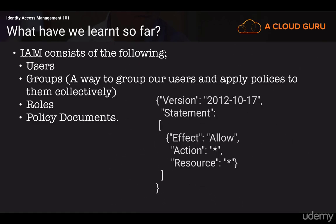If you remember from our administrator access in the lab, we saw something like this. We have our attribute which is a version, and then our value which is the date. Then our attribute which is the statement, and then our values. We can actually start to nest if we use the square brackets. Our attribute is effect and our value is allow. Our attribute is action and our value is the wildcard. Then resource is our attribute and the value is again the wildcard — essentially saying allow any action to any resource.